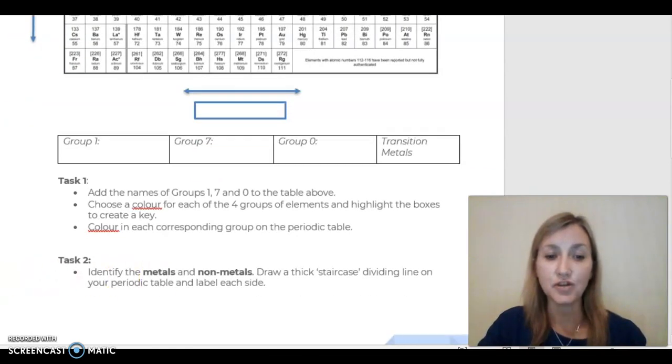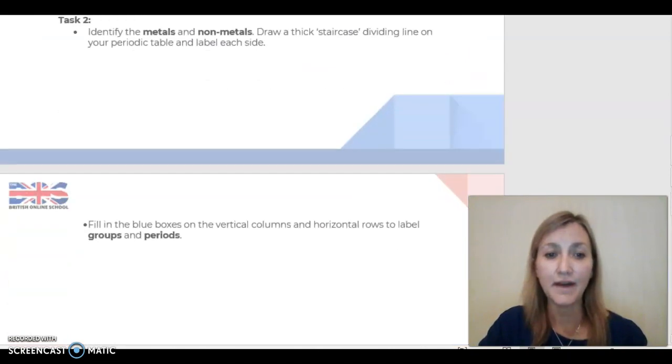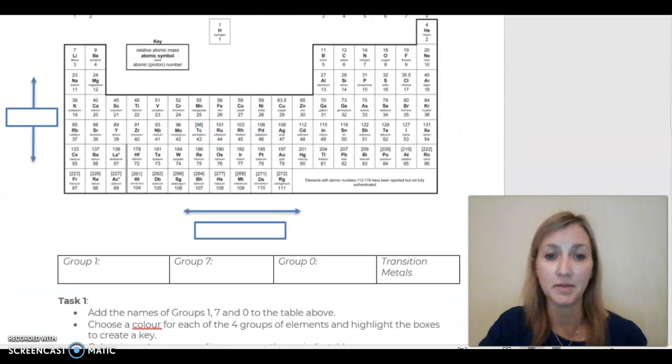When you've done that, you should then look and identify the metals and the non-metals on the group. You can use the Periodic Tables that have been linked in the class PowerPoint in order to help you identify these areas. Draw the thick staircase dividing line on your Periodic Table and label each side of that line. The final thing to do is to fill in the blue boxes on the vertical columns and horizontal rows to label the groups and the periods.